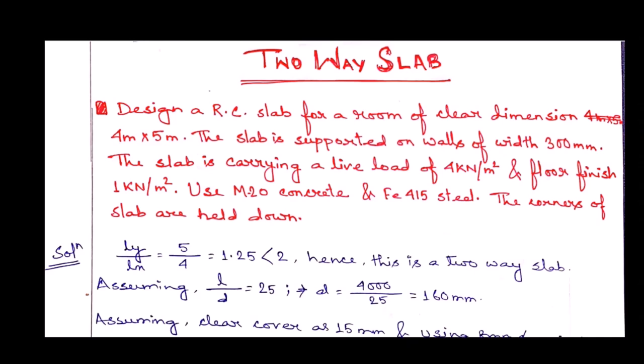As per IS-456-2000, if the ratio of longer span to shorter span is less than 2, then we have to design the slab as a two-way slab, as discussed in the previous video.